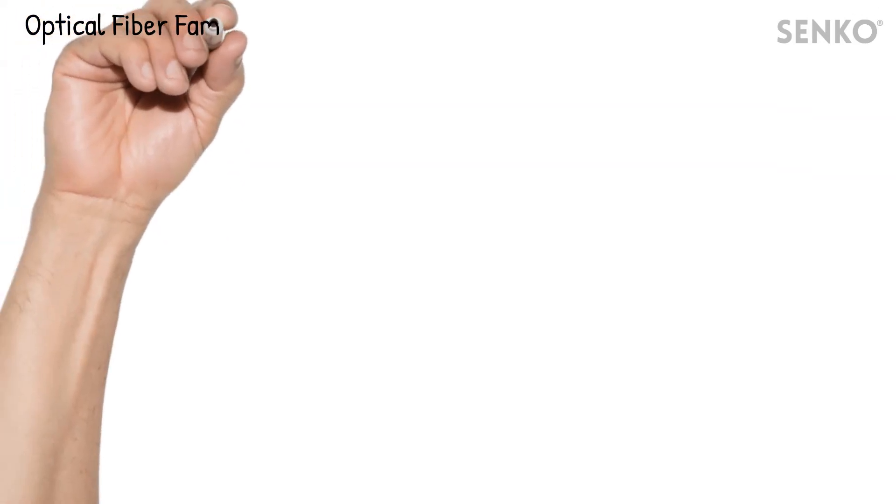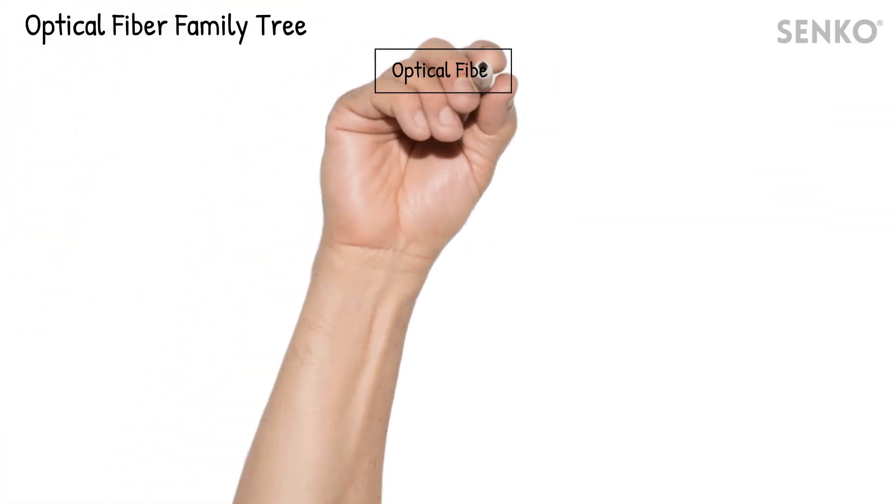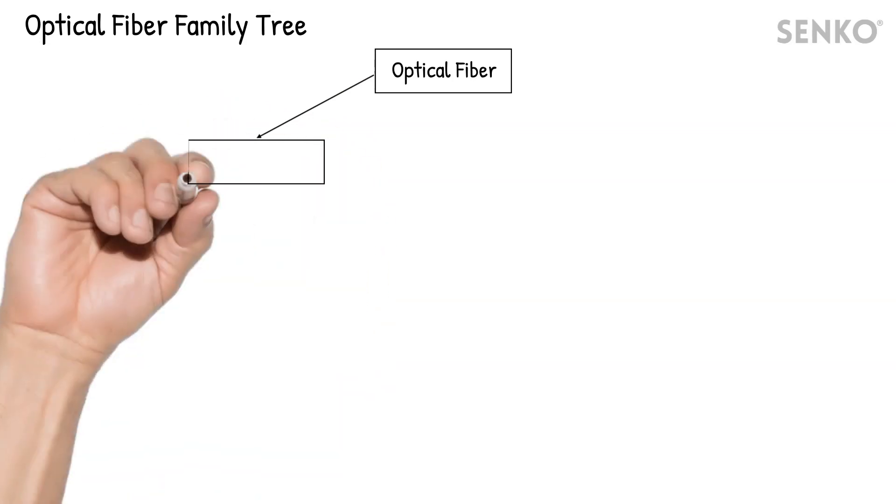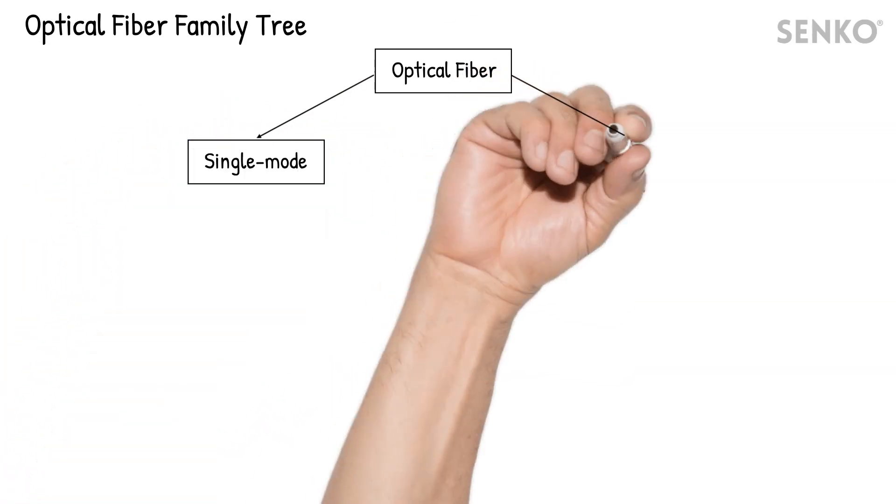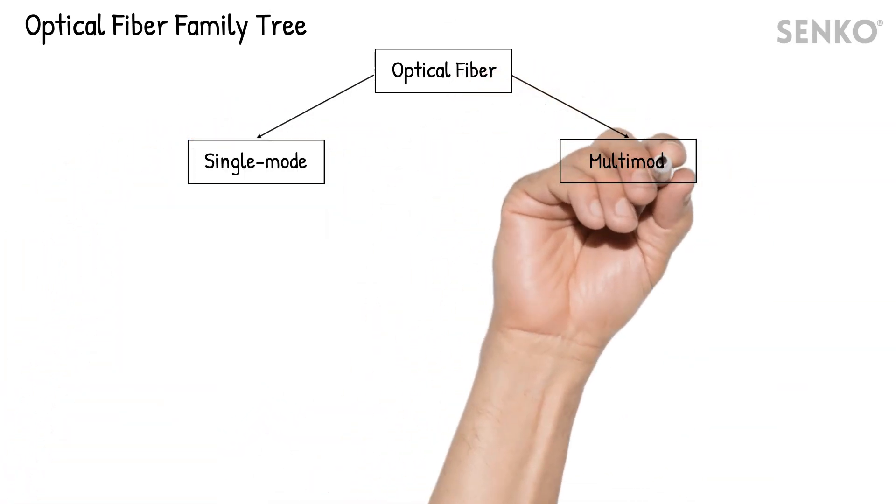Almost all identical fibers may look the same, but on the inside, they can be very different. The two most common types are known as single-mode and multi-mode fibers.